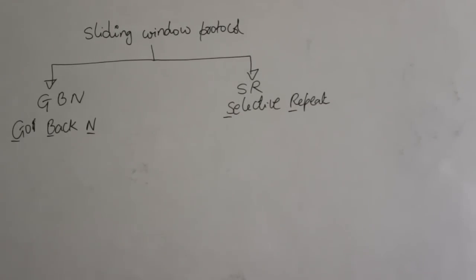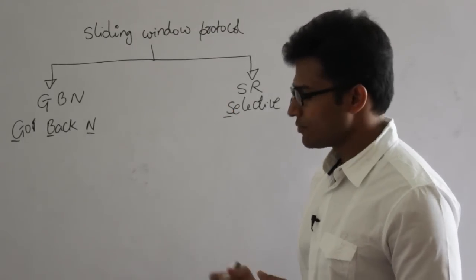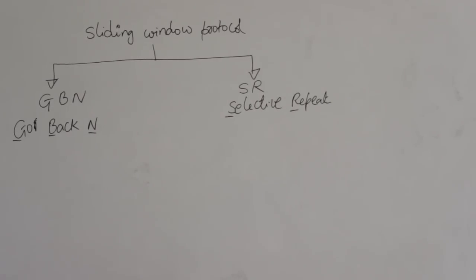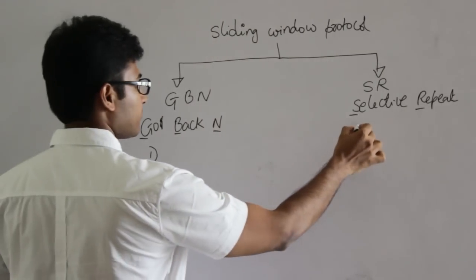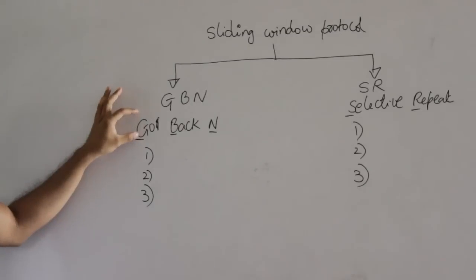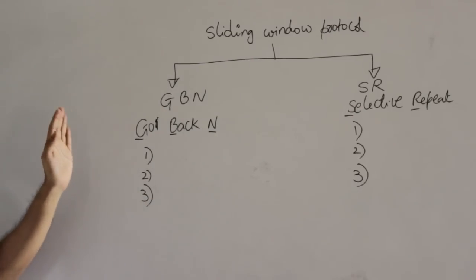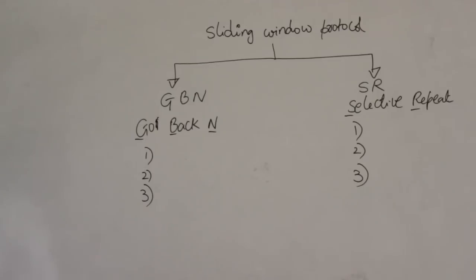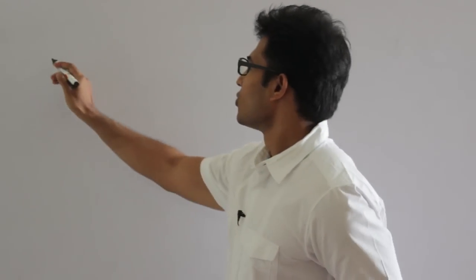So Go Back N and SR — we have these two protocols. In order to explain these two protocols, I will cover three points each. First I'll teach three points about Go Back N, then three points about SR. In each point I will explain the features of these protocols and explain why they have these names. Finally, we shall compare stop and wait, Go Back N, and SR across many parameters. Now let's talk about Go Back N first.